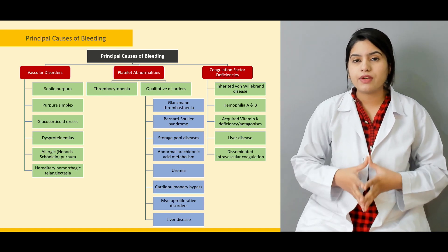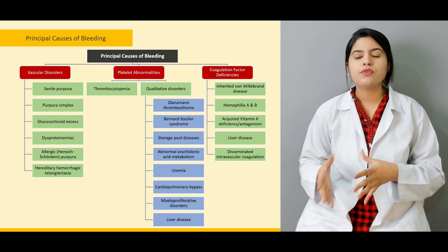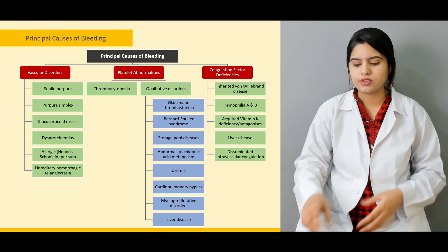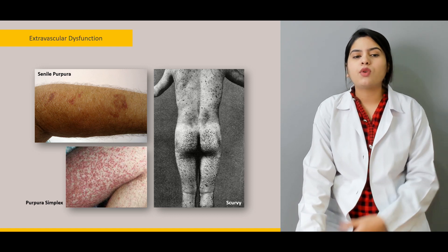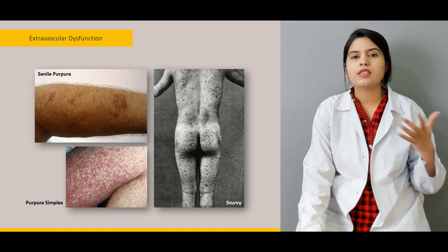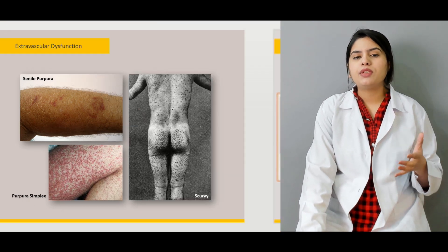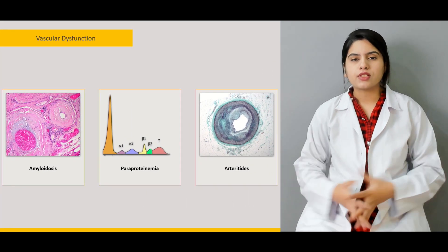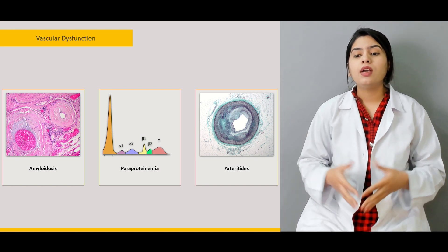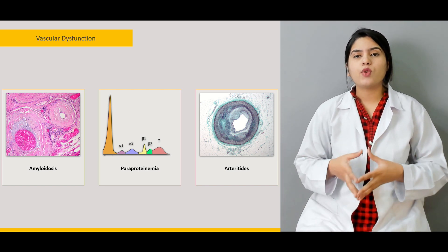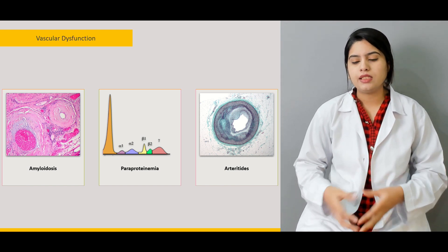In this lecture we will discuss vascular and extravascular disorders in detail, covering platelet abnormalities and coagulation factor deficiency in coming lectures. We will start with extravascular dysfunction involving senile purpura, purpura simplex, and scurvy, examining the causes behind these three conditions. Then we will discuss vascular dysfunction, including the deposition of immunoglobulin fragments on the endothelial surface.